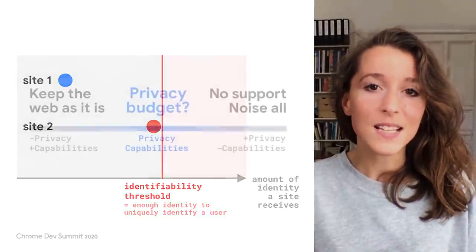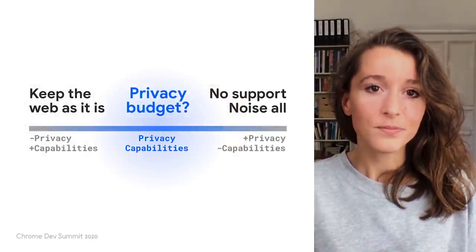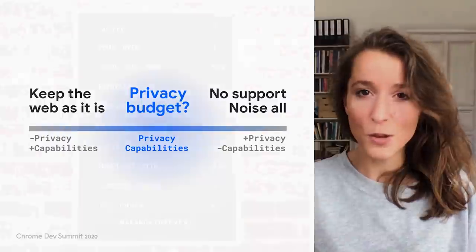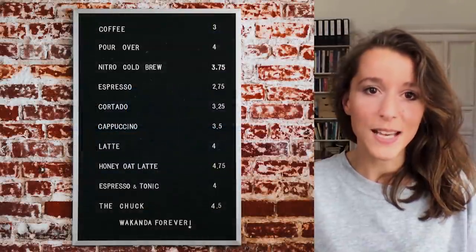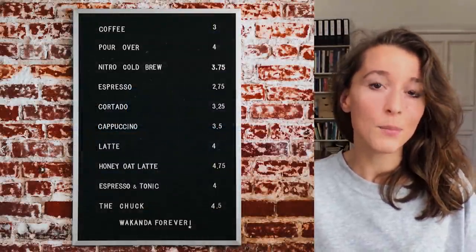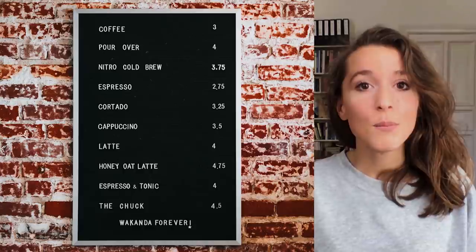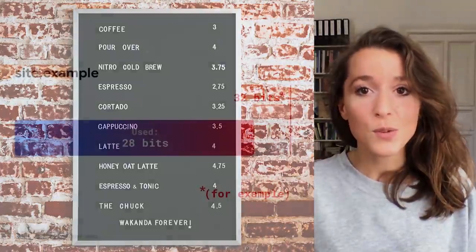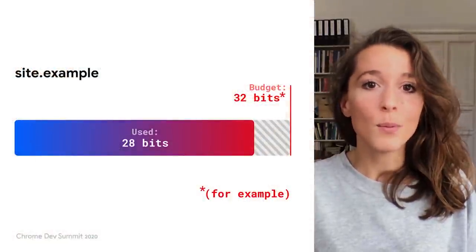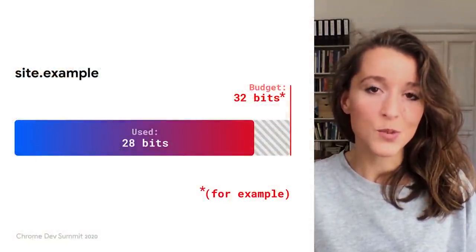Well, that's the idea of the privacy budget. As a developer, you would decide how to spend your site's budget — a bit like performance budgeting in a way — but the browser would define the upper limit and enforce it to protect user privacy.